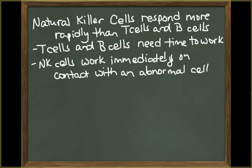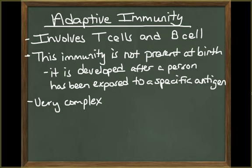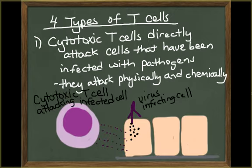Natural killer cells respond much more rapidly than T cells or B cells. While the activation of T cells and B cells is a complex and time-consuming series of events, natural killer cells respond immediately on contact with an abnormal cell. T cells and B cells are more selective in their attack of pathogens — this is called adaptive immunity. Adaptive immunity is not present at birth but must be developed after a person has been exposed to a specific antigen. The four types of T cells have different roles in the immune response.